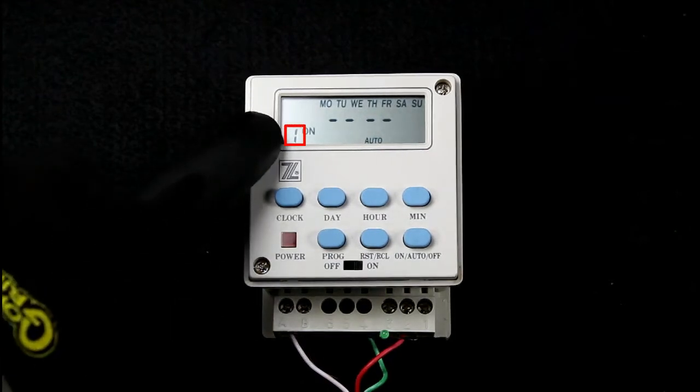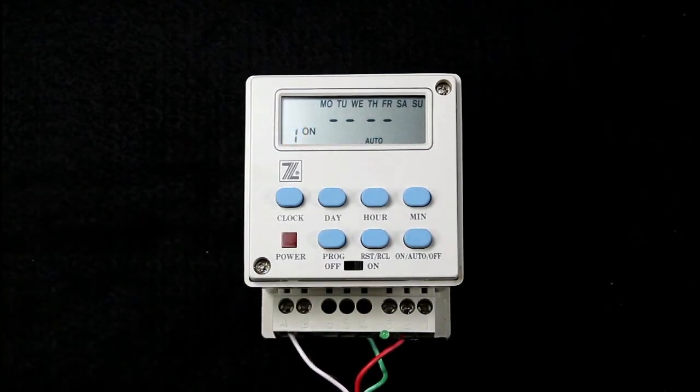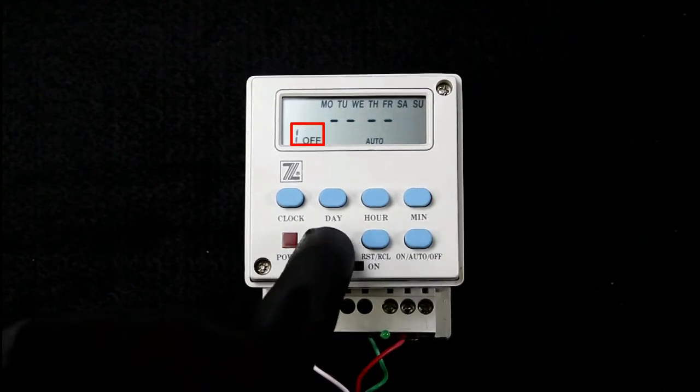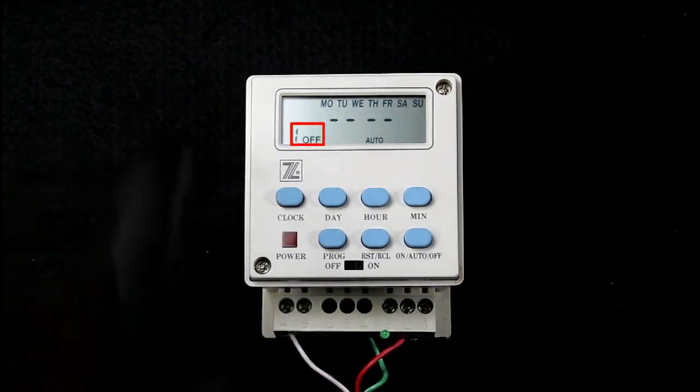This is the program cycle number. Now this model has six programmed cycles. This on indicates we are in programming one, turn on time. If I press the program button again, it will move to program one, turn off time.